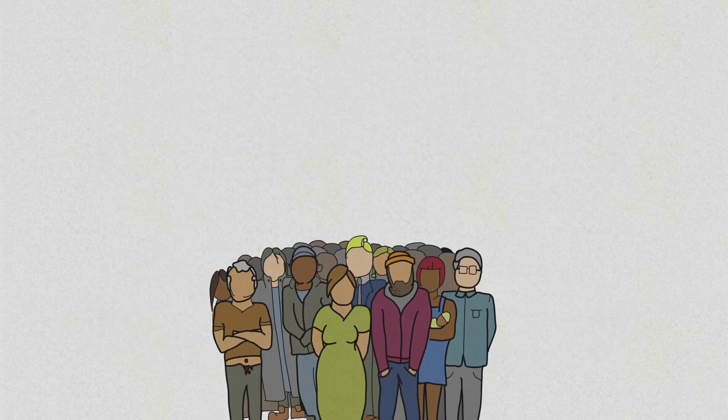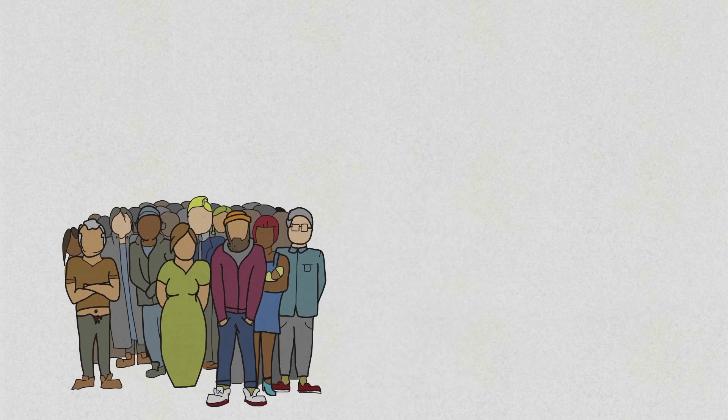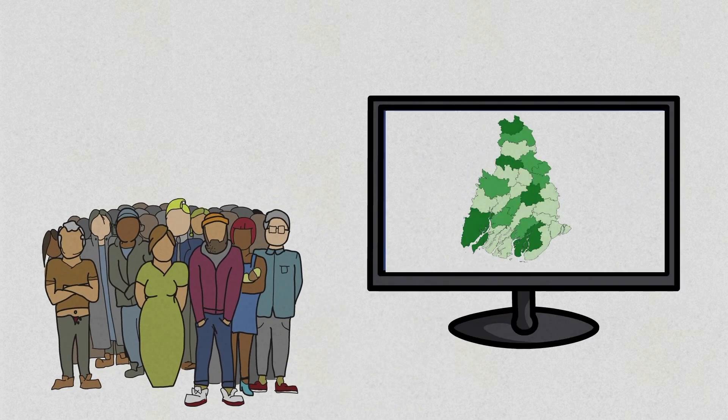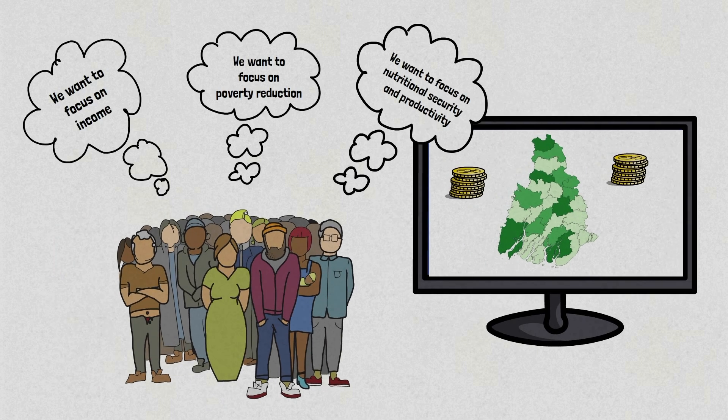To understand how the decision support tool works, let's introduce you to our group of stakeholders. Here we have members from local government departments, small-scale farmers and fishers and NGOs who have come together to help determine priority areas for investment in the region. These stakeholders have a number of different priorities. The decision support tool provides a forum for participatory discussions that can account for each stakeholder's requirements in determining rice fish suitability.